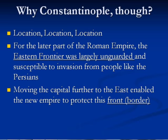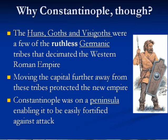So why did they pick Constantinople as their capital? First of all, during the later part of the Roman Empire, that eastern frontier close to Persia was susceptible to invasion. They wanted to move the capital to a place where they could defend that area more easily. Another reason was they wanted to get away from those barbarian tribes in the west, and they were able to do that by moving the capital to Constantinople.